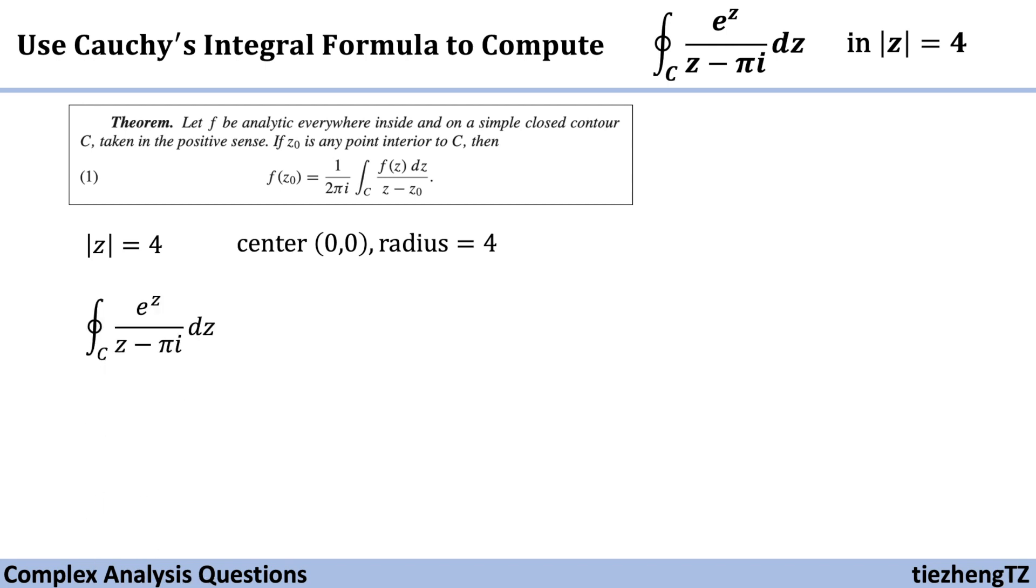Next, considering the given function e^z/(z-πi) and comparing this with the one in the theorem, we can make f(z) = e^z.